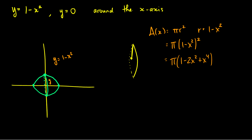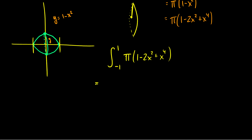Now we can take the integral. Expanding (1 minus x squared) squared gives 1 minus 2x squared plus x to the fourth. The integral runs from negative 1 to 1, because those are our intersection points with the x-axis. I'll pull out pi, and since the function is symmetric, I'll take the integral from 0 to 1 and multiply the entire thing by 2. So the integral from 0 to 1 equals half the integral from negative 1 to 1.